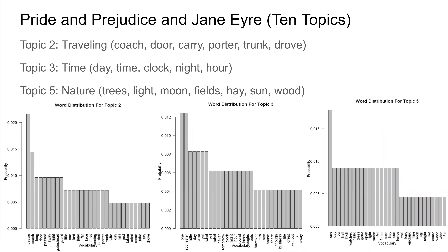We now perform LDA on this corpus again — with Pride and Prejudice and Jane Eyre — but this time with 10 topics. Here is part of the output generated by LDA with variational inference. There are three topics I was able to interpret. One topic had top words including coach, door, carry, quarter, trunk, and drove — which I interpreted as a travel-themed topic. Another topic had top words including day, time, clock, night, and hour — interpreted as a topic about time. Another topic had top words of tree, light, moon, fields, hay, sun, and woods — interpreted as a topic about nature.